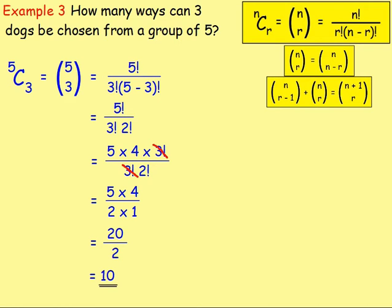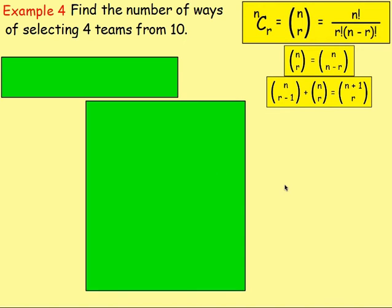So there are 10 ways of choosing three dogs from a group of five.